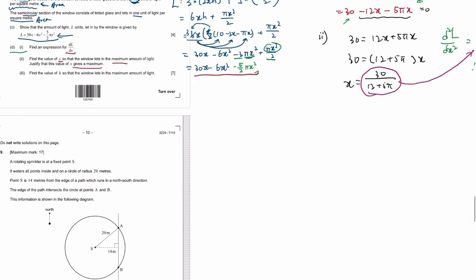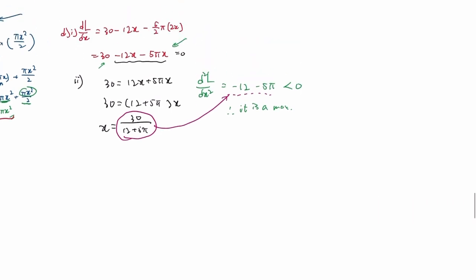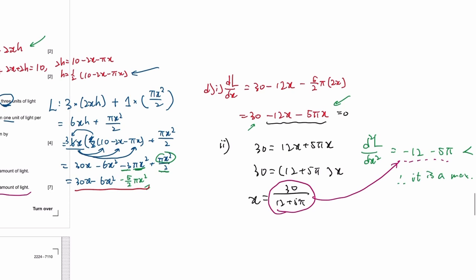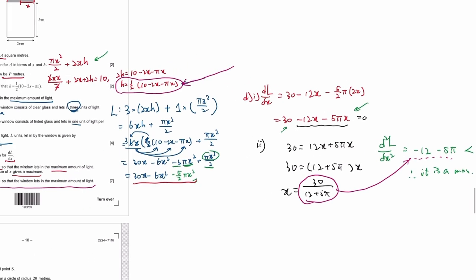Find the value of h so that the max light is maximum. I mean we know this, so we just sub in. Can I not do that? You just use the calculator, okay.